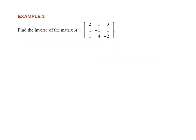Let's see how this works in an example. We're given matrix A, and we want to find its inverse using the adjugate formula. We start by finding nine cofactors since it's a 3-by-3 matrix. For cofactor C11, we delete row one, column one, and take the entries negative one, one, four, and negative two. This first cofactor is positive, and when you do ad minus bc you should get negative two.